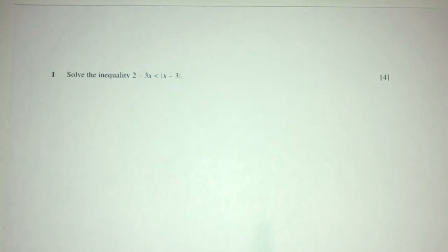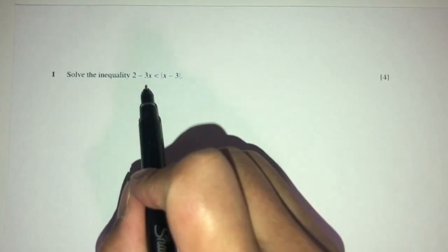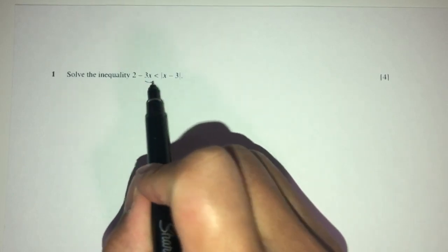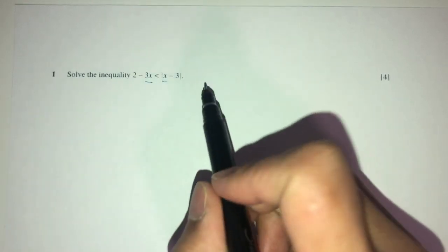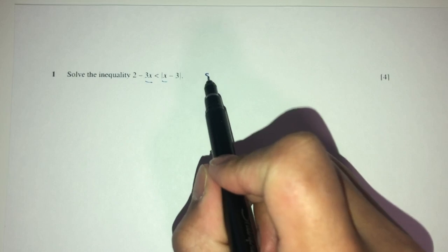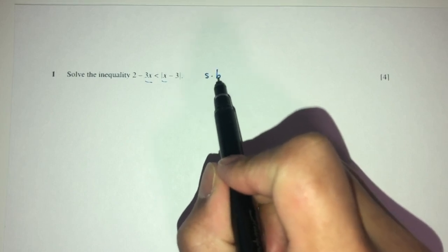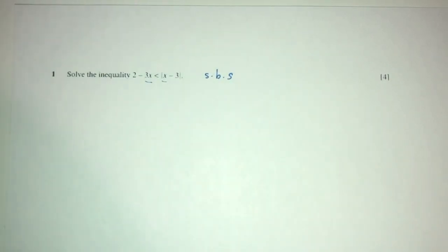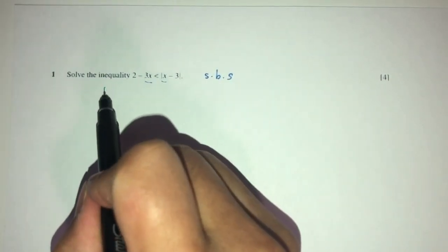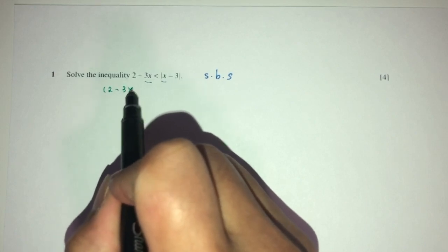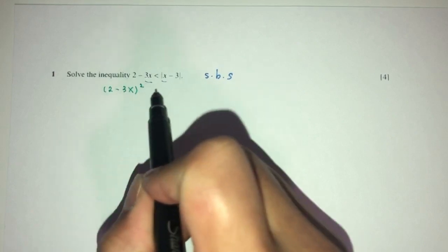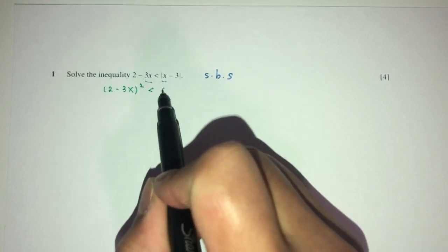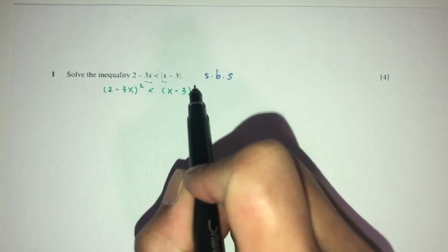So, here we have to solve this inequality. Now, by observation, we can see we have x on both sides. If we have that, we tend to square both sides to help us solve this inequality. So, square both sides. You will have 2 minus 3x squared less than x minus 3 squared.